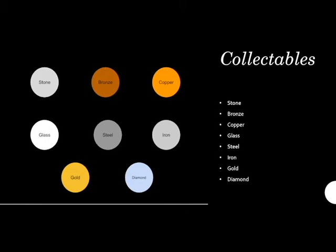There is a variety of materials the player can collect such as stone, bronze, copper, glass, steel, iron, gold, and diamond. Collecting these resources, the player would be able to use them to upgrade the spaceship before starting a new trip.